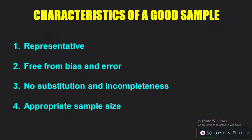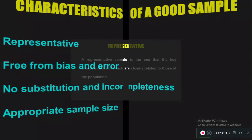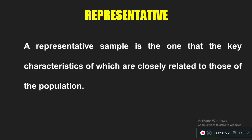Now we look at the characteristics of a good sample. There are four basic characteristics: representative, free from bias and error, no substitution and incompleteness, and appropriate sample size. First, representative means a sample must reflect the characteristics of the population very closely. For example, if the population is the nursing profession, the sample of nursing students must have completed a nursing course — the sample must have similar characteristics to the population.